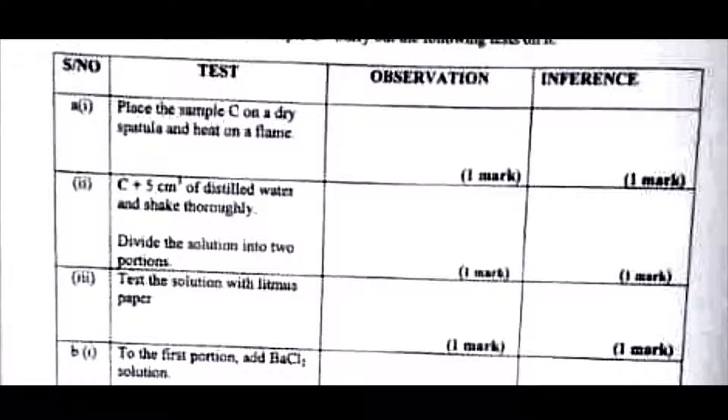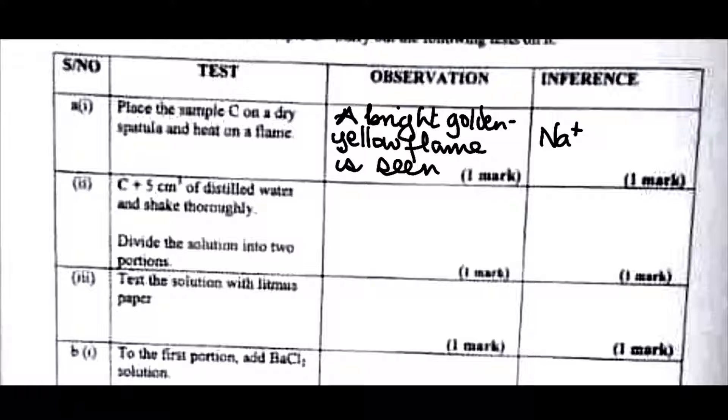You don't use aqueous ammonia or sodium hydroxide to test for sodium ions. That's why we have to make use of the flame test. And sodium ions show a golden yellow flame when heated. So the observation here will be a bright golden yellow or a bright yellow flame. What's the inference? The inference here is that sodium ion is present.